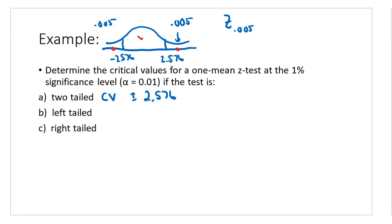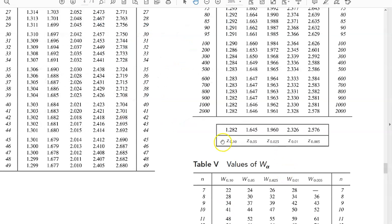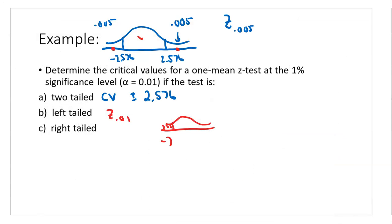For a left-tailed test at 1%, you look for Z of 0.01, which is 2.326 — but since it's left-tailed, it becomes negative 2.326. For a right-tailed test at 1%, it's the same value but positive: 2.326. If the test statistic falls to the right of that critical value on a right-tailed test, reject the null hypothesis; if it falls inside, do not reject.